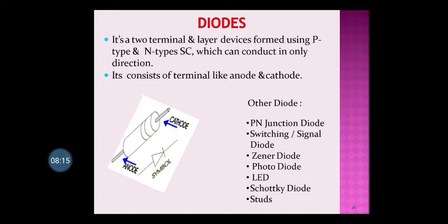The diode has two terminals: one is called anode and the other is called cathode. The symbol of the diode shows an arrow and a straight line — the arrow side terminal is the anode and the straight-line side is the cathode. You get different types of diodes: p-n junction diode (normal diode), signal diode, zener diode, photo diode, light emitting diode, Schottky diode, etc.